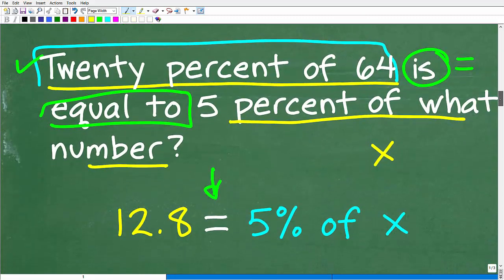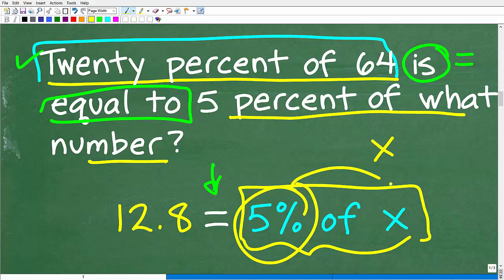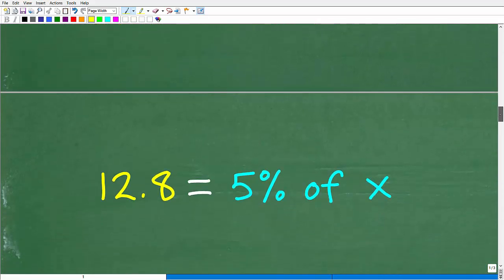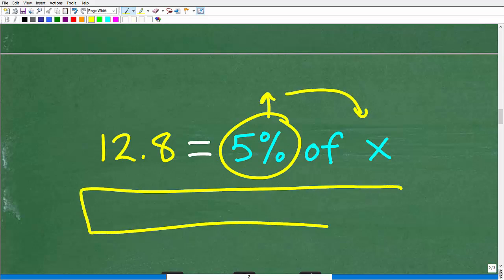So this is basically what we need to do here. So let's go back to this part of the problem where we're translating. 20% of 64, we already know is 12.8, is equal to 5% of what number? So it's 5% of x. But right here, we're going to actually have to change this percent into a decimal and then multiply it by this variable, and we're going to end up with a lovely algebraic equation to solve. So hopefully you kind of see where this is going. So let's go ahead and do that right now.